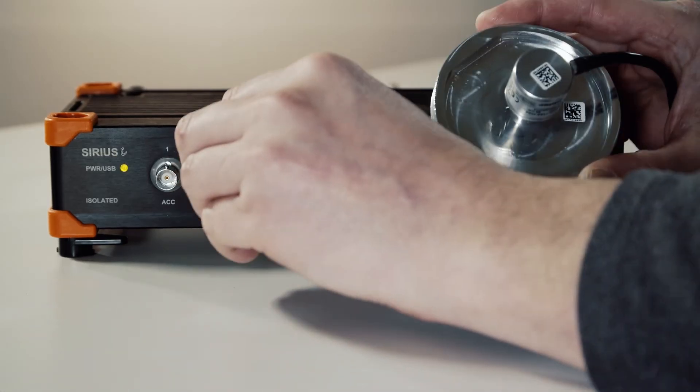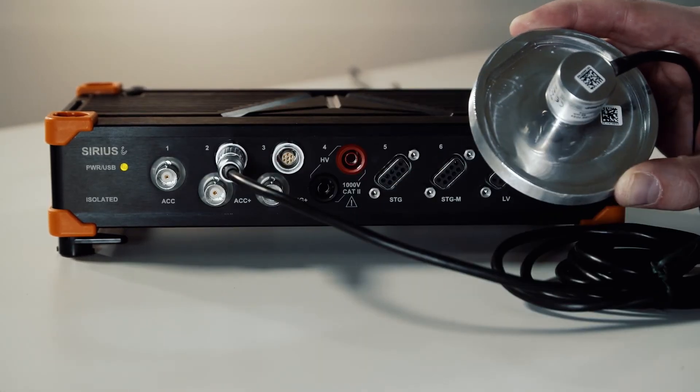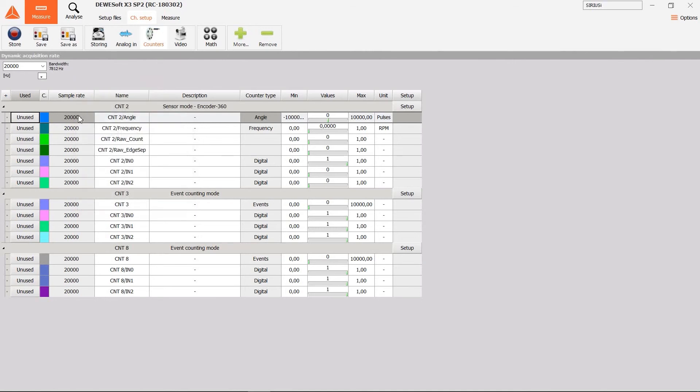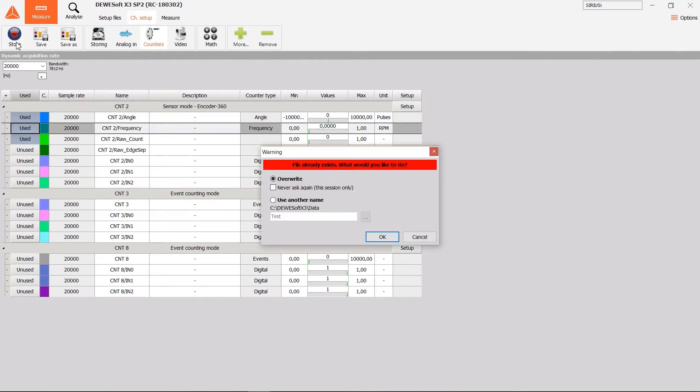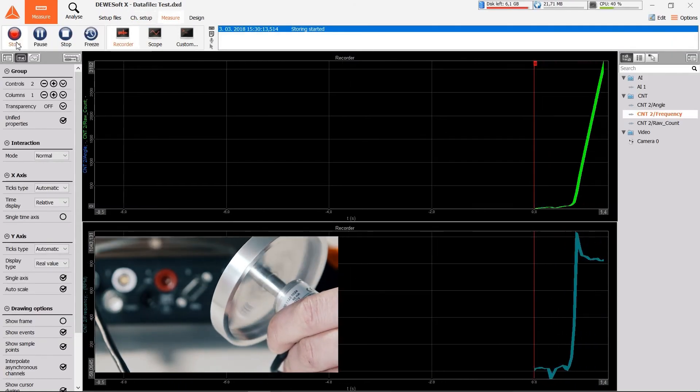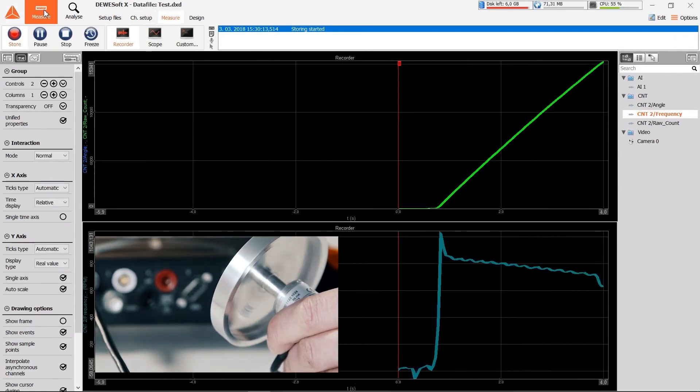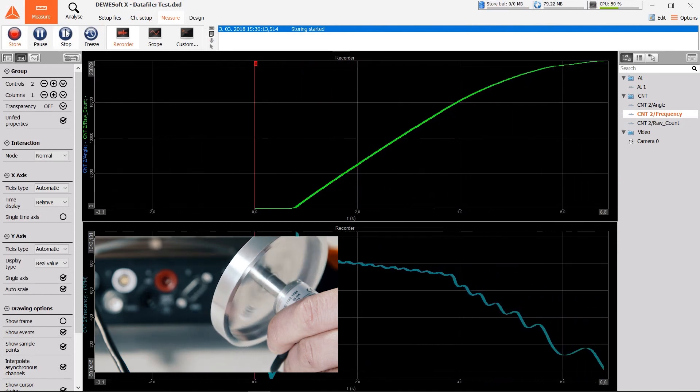Let's see how it works. We have encoders connected to counter input. We will choose the raw counting, which will reflect how counters are usually working. Then let's choose the super counter, angle channel, and frequency measurement. Let's go to recording, spin the wheel, and take some measurements.